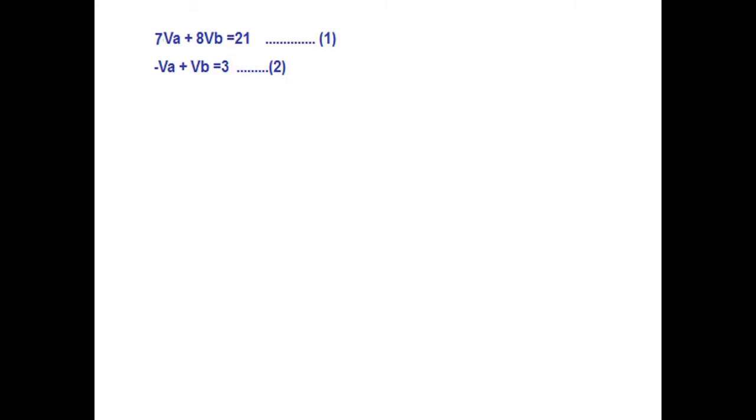Now these are the two equations. How to solve them? If you multiply this equation by 7, then both will be 7 and we can eliminate these terms. So that is what has been done here. Multiplying equation number 2 by 7, it becomes negative 7VA plus 7VB plus 21.